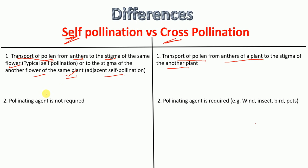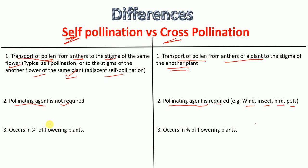Because transport of pollen occurs within the same plant in self-pollination, there is no requirement of pollinating agents like wind or insects. Whereas in cross-pollination, because pollination happens between plants, there is a requirement of pollinating agents. These pollinating agents include wind, insects, birds, and other animals, which transport pollen from the anthers of one plant to the stigma of another plant.